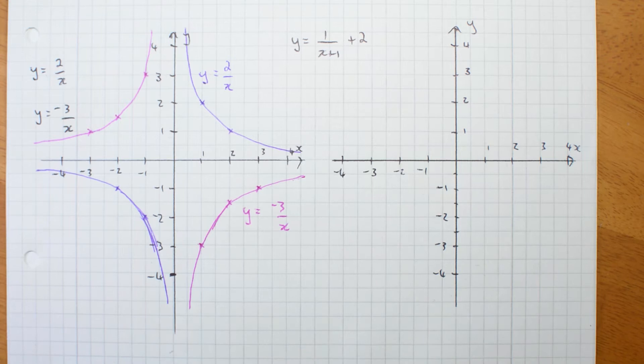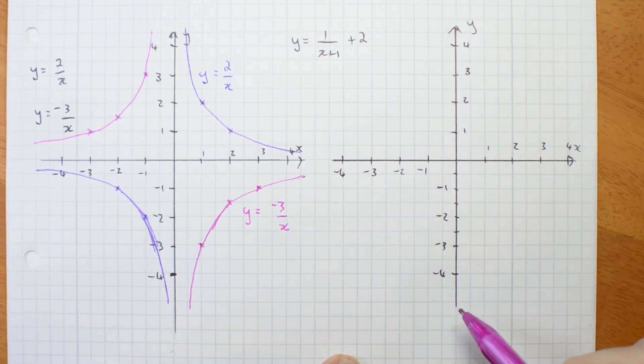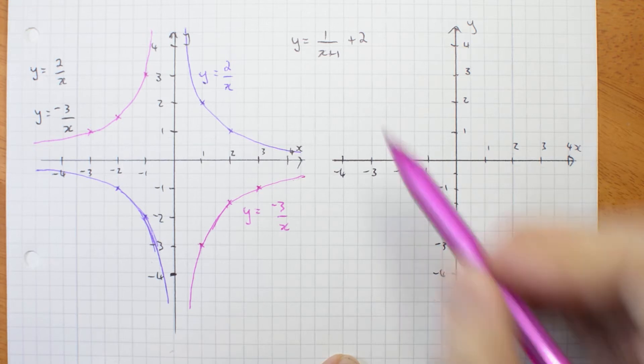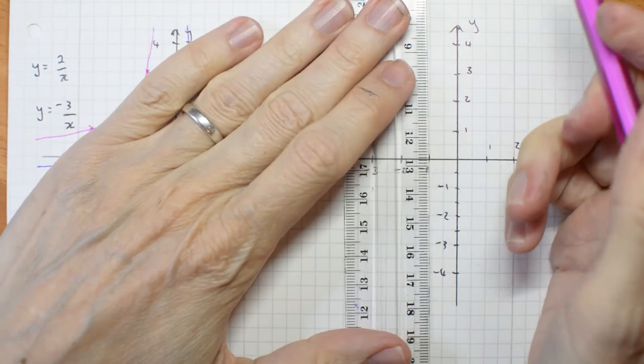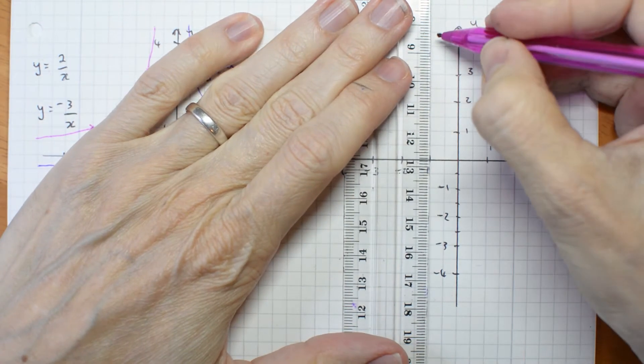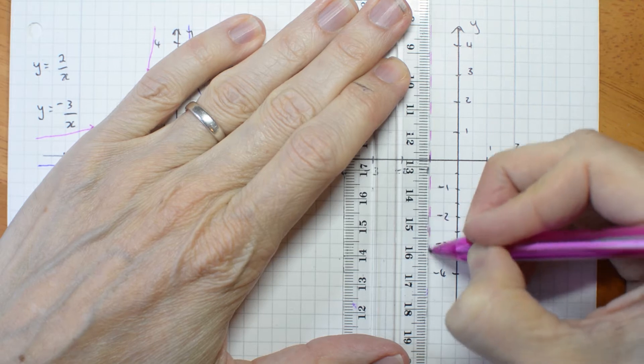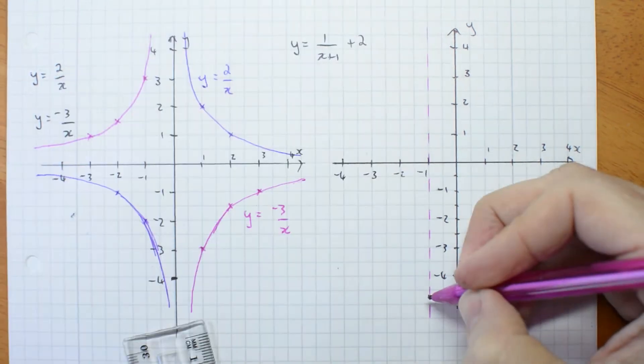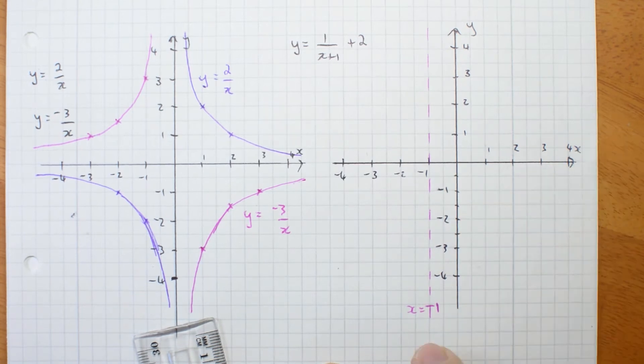So my asymptotes are normally y equals 0 and x equals 0. So here I've been shifted left by 1, so my new asymptote is here. And that is x equals negative 1, that's one of the asymptotes.